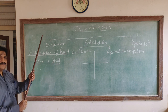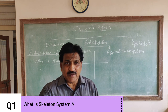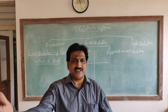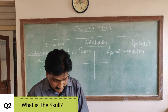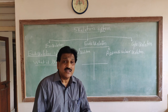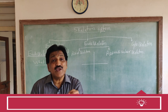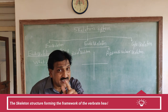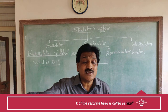First I will take the skull. What is the skull? The framework of the vertebrate head is called the skull. That is the definition for the skull of rabbit.